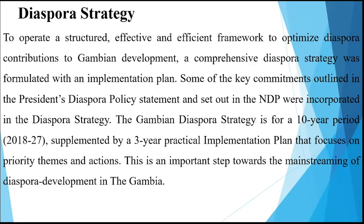Also targeted were 20 diaspora direct investments and issuance of two diaspora bonds, as well as co-financing of civil society and social impact projects from the diaspora. The diaspora strategy was put in place to create a structured, effective, and efficient framework to optimize diaspora contributions to Gambian development. The strategy was formulated with an implementation plan, and the Gambian diaspora strategy covers a 10-year period from 2018 to 2027, supplemented by a 3-year practical implementation plan that focuses on priority themes and actions.